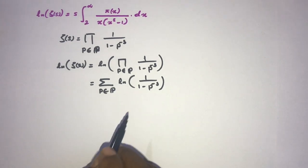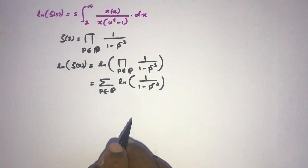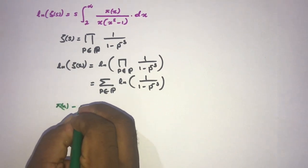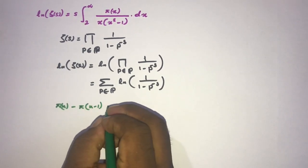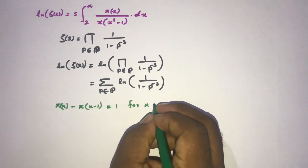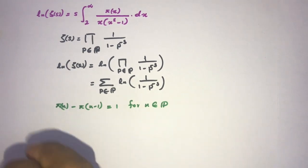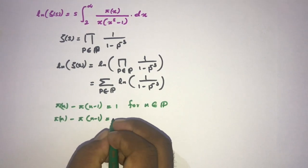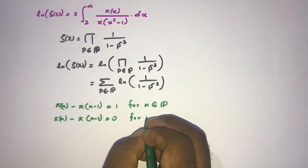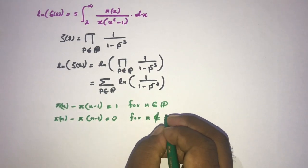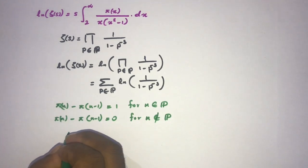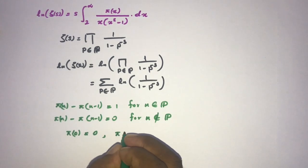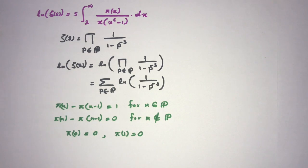Now I am going to use some identities according to the definition of the prime counting function. We know that pi(n) minus pi(n-1) equals 1 if n is a prime number, and pi(n) minus pi(n-1) equals 0 if n is not a prime number. Also, pi(0) equals 0 and pi(1) equals 0.